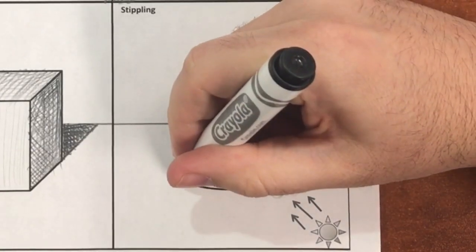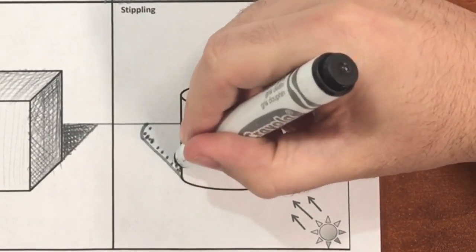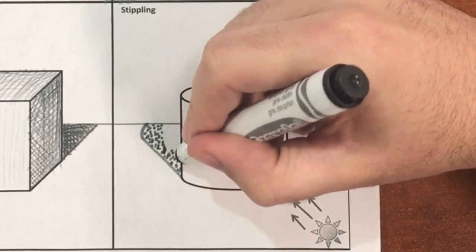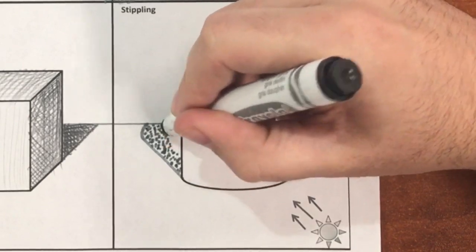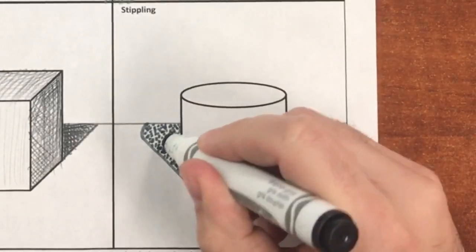For the final form, the cylinder, we're going to be using the stippling technique. Again, make sure that your shadow follows the direction of the light and begin drawing or filling in value on the darkest region, the cast shadow.